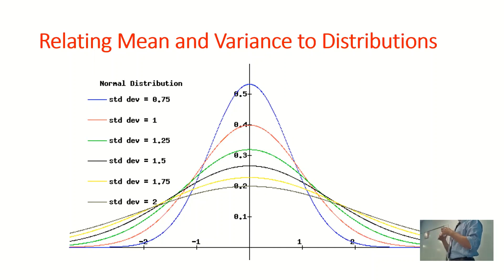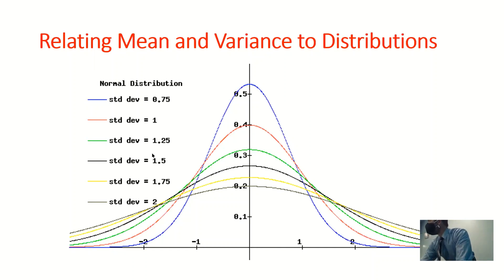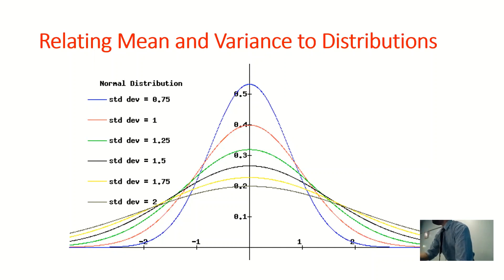I'll revisit this slide in about three or four weeks. I just want to start introducing how variance shapes these distributions. If the mean were higher but the variance the same for two data sets, a higher mean just shifts the distribution to the right or to the left, depending on whether it's higher or lower.